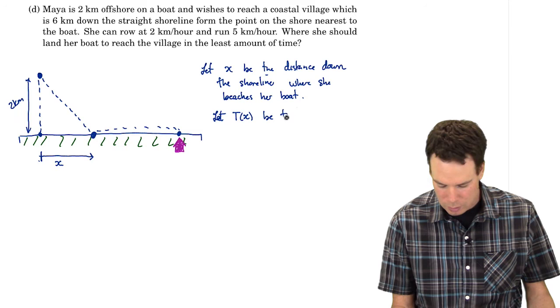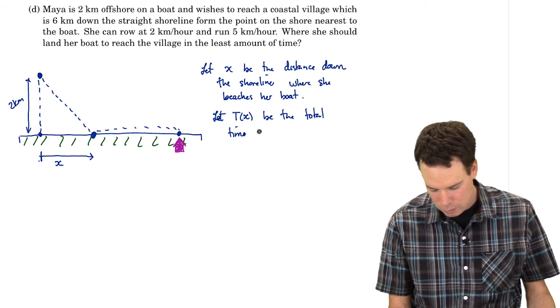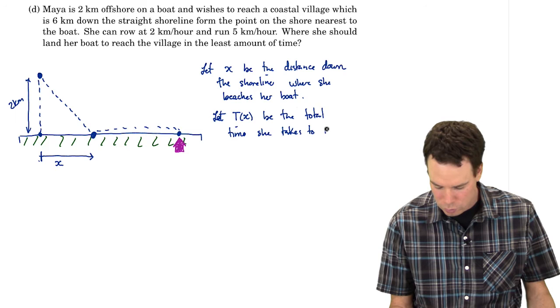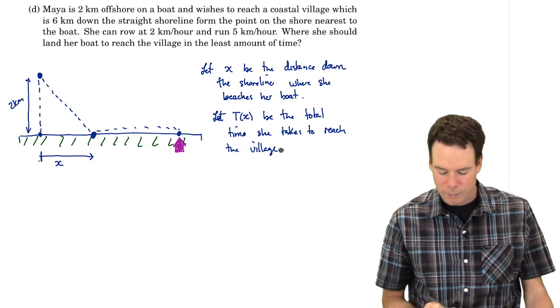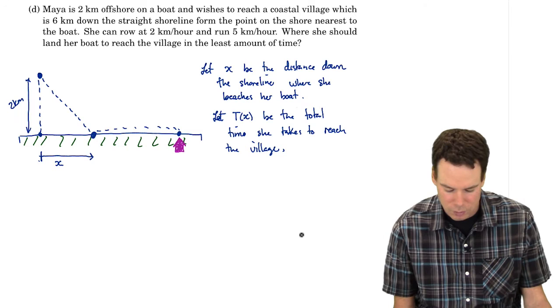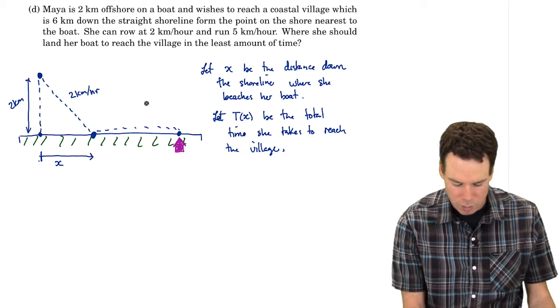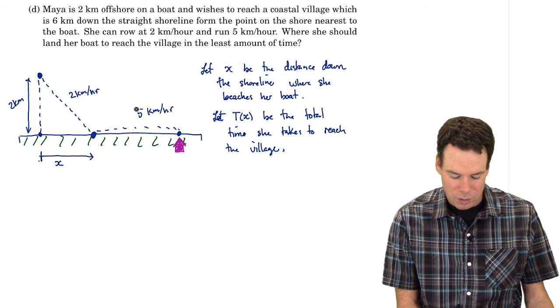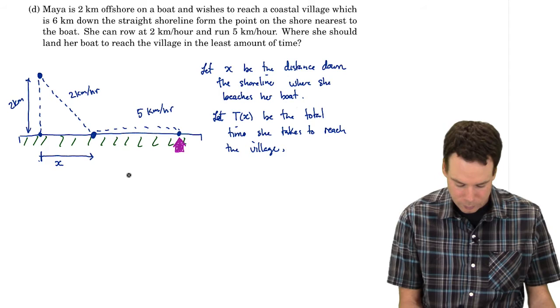Let capital T be the total time she takes to reach the village. We're interested therefore in minimizing this function T. So we've got to find that function T first. What do we know? We know she can row at two kilometers per hour. We know she can run at five kilometers per hour. The question is how can we use these two bits of information to write down our function T?